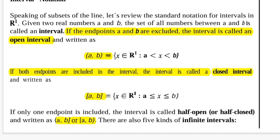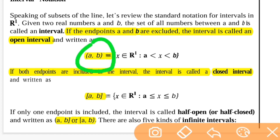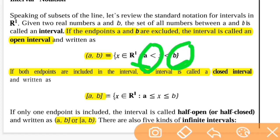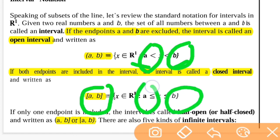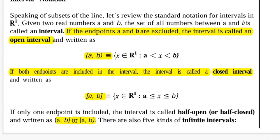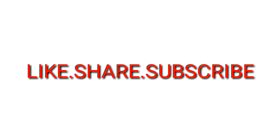Now let's look at interval notations. This is a way of writing values of x indicating that x lies between two limits. For an open interval, we use round brackets, meaning x lies between a and b but is not equal to either a or b. For a closed interval, we use square brackets, which means we include the limits a and b. We also have half-open, half-closed intervals where one bracket is round and the other is square. The closed interval includes the limits and the open interval does not.